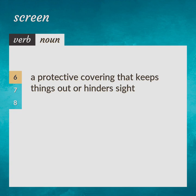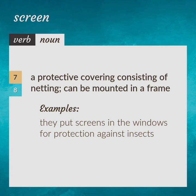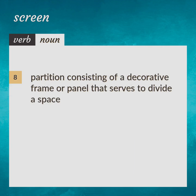A protective covering that keeps things out or hinders sight. Blind. A protective covering consisting of netting, can be mounted in a frame. They put screens in the windows for protection against insects. Partition consisting of a decorative frame or panel that serves to divide a space.